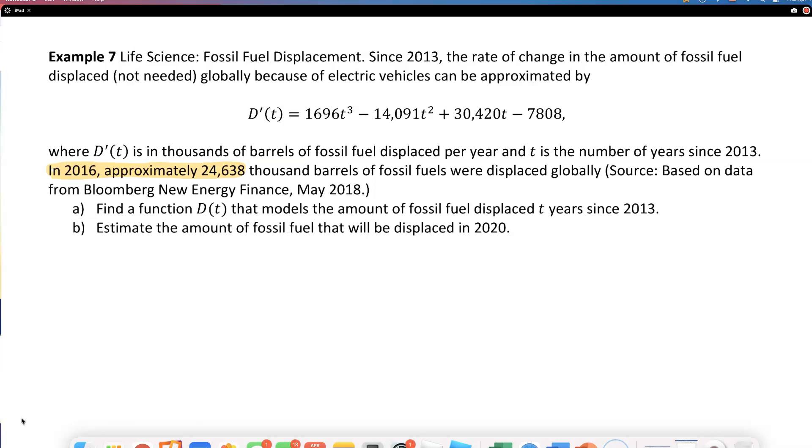In 2016, approximately 24,638 thousand barrels of fossil fuels were displaced globally. Did you see what they just did? They gave us an initial condition. 2016 is three years from 2013, so when t is three, D(3) equals 24,638 thousand barrels of fossil fuel. They gave us an initial condition that we're going to be able to use when finding the function D(t) that models the amount of fossil fuel displaced t years since 2013.